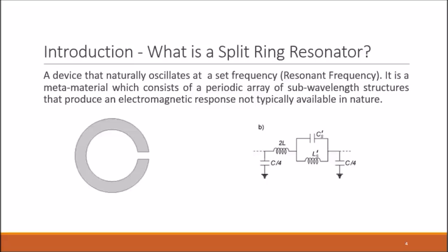To begin, we need to know what is a split ring resonator. This is a device that naturally oscillates at a set frequency known as the resonant frequency. It is a metamaterial which consists of a periodic array of sub-wavelength structures that produce an electromagnetic response not typically available in nature.